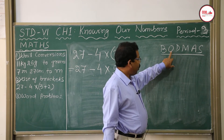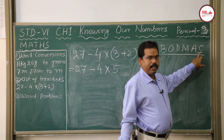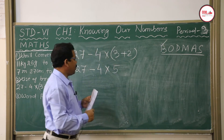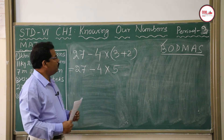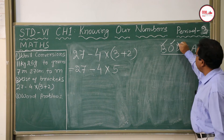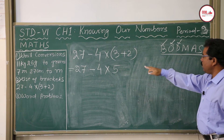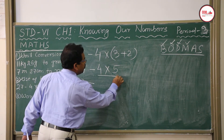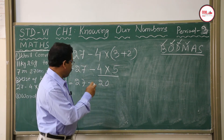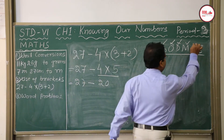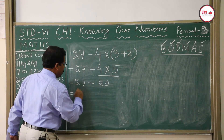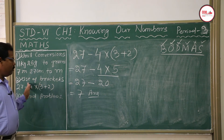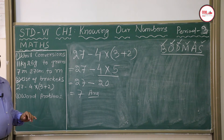The bracket is already completed, giving 5. O (of) is not there, D (division) is not there. Next is multiplication: 27 − 4 × 5. So 4 × 5 = 20. No addition present. Finally, subtraction: 27 − 20 = 7. That is your answer. This is all about brackets, and some book problems involve solving expressions using this rule.